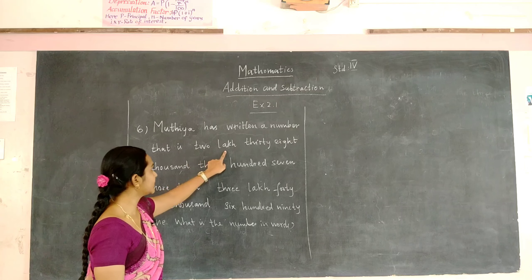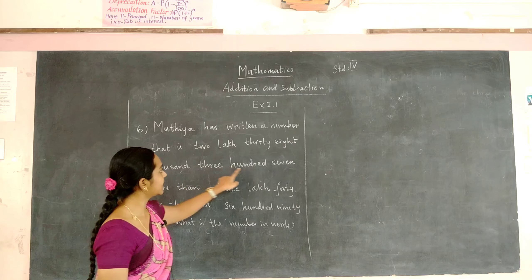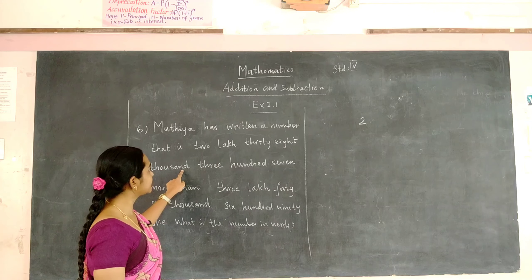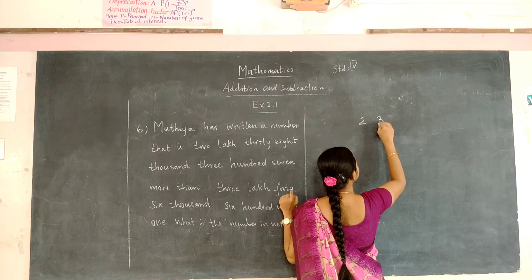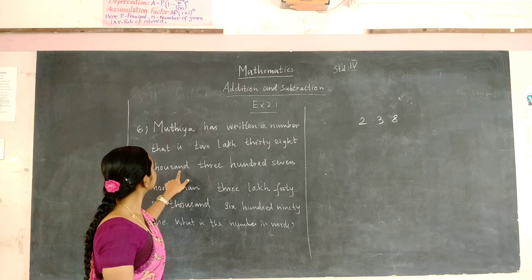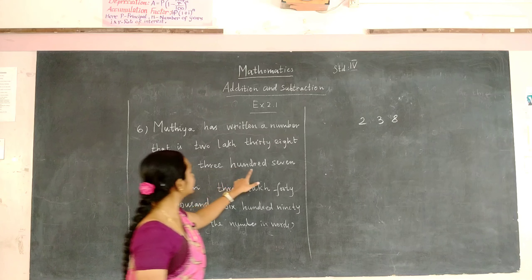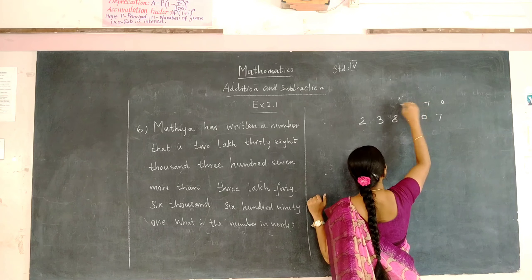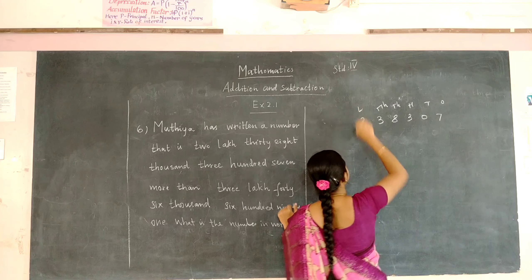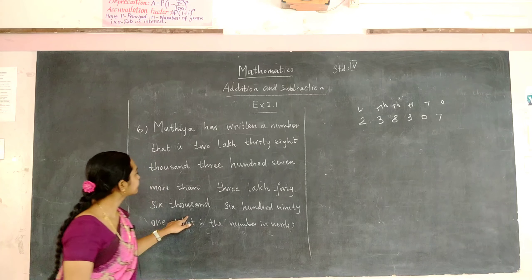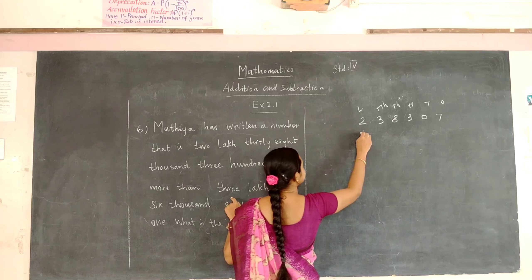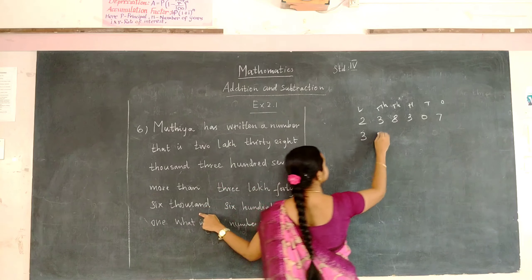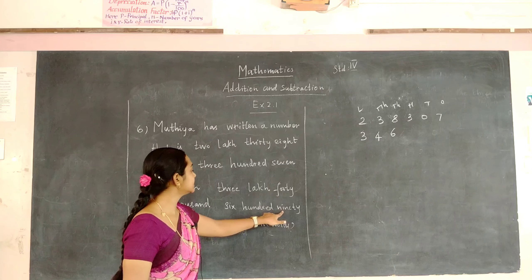The first number is 2,38,307. In the lakhs place we have 2, in the thousands period we have 38, and in the ones period we have 307. Now write the place values: ones, tens, hundreds, thousands, ten thousands, and lakhs. The second number is 3,46,691. In the lakhs place we have 3, in the thousands place we write 46, and the hundreds and ones are six hundred and ninety one.